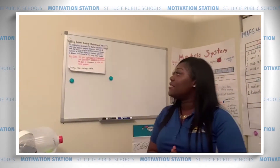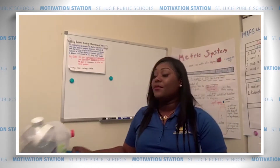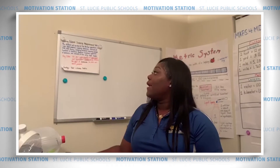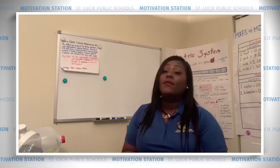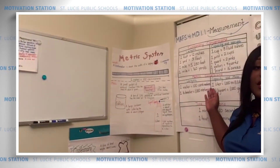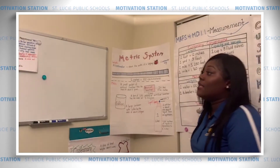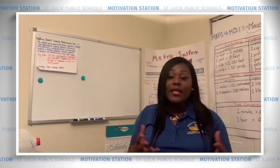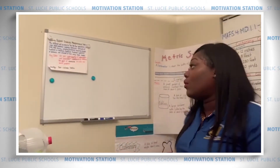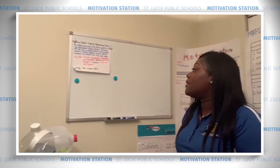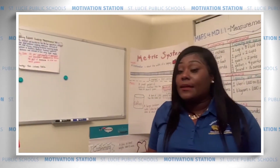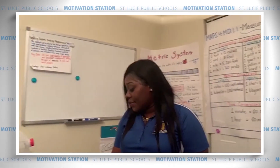Our key idea says: use your understanding of measurement. We understand the relative size of the units and equivalent relationships. We use our reference sheet to help us understand the equivalent relationships between the units of measure, and that's how we're going to solve these real-world problems. Our strategy for this lesson will also be the two-column table.